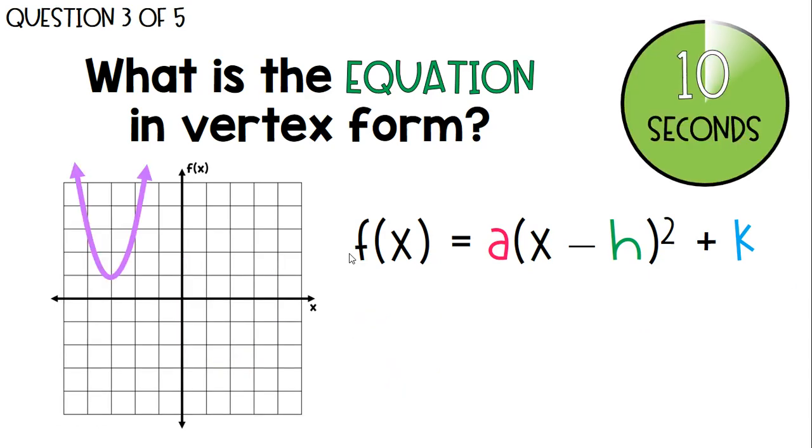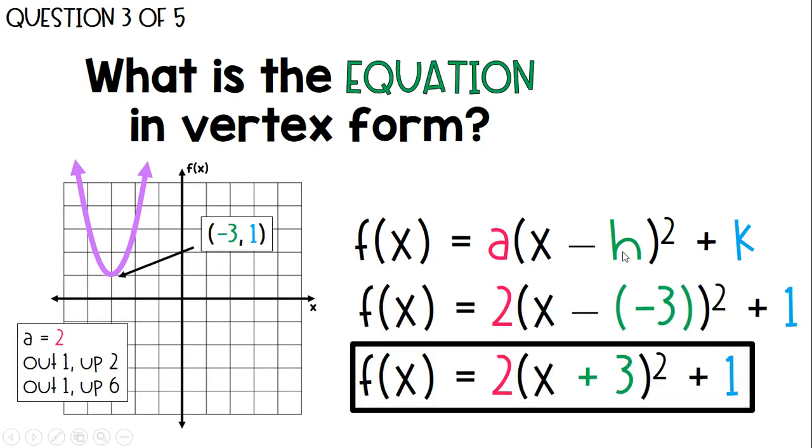Next one. Determine this vertex and the a value. Hopefully you have the vertex and the a value. The vertex here is negative 3, 1. So if I plug in a negative 3 for h, it becomes x plus 3. The positive 1 at the end is good to go. Now, my a value is actually 2 because from the vertex, it's going up 2. And if I was to continue this, it would go out 1, up 6, because instead of plus 1, plus 3, if it's doubled, plus 2, plus 6, then I know my a value had to be 2. And so this is what my equation would look like.